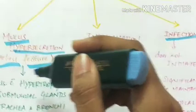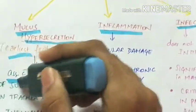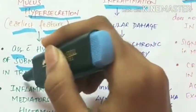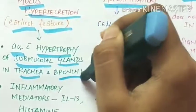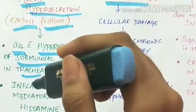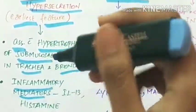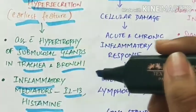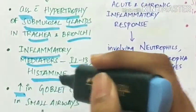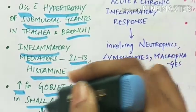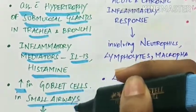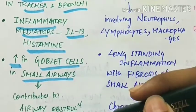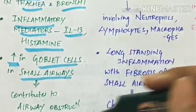Mucus hypersecretion is associated with hypertrophy of submucosal glands in the trachea and bronchi, and there is release of inflammatory mediators like interleukin-13 and histamine. There is also an increase in the number of goblet cells in small airways, which contributes to airway obstruction.